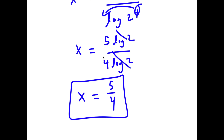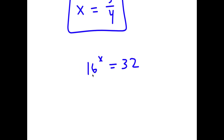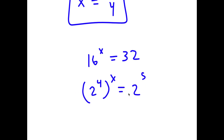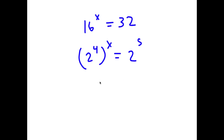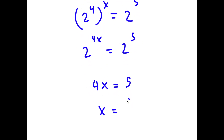For my second method, I have 16 to the power of x equals 32 again. This time I'm going to rewrite 16 as 2 to the power of 4. So I have 2 to the power of 4 to the power of x is equal to 32, and rewrite 32 as 2 to the power of 5. So now this is 2 to the power of 4x is equal to 2 to the power of 5, meaning 4x is equal to 5 and x is equal to 5 over 4. That is my second method.